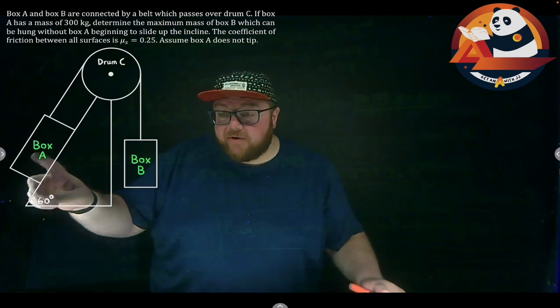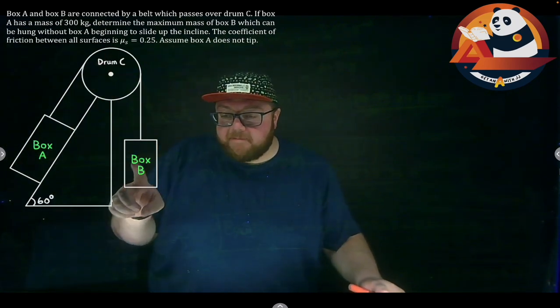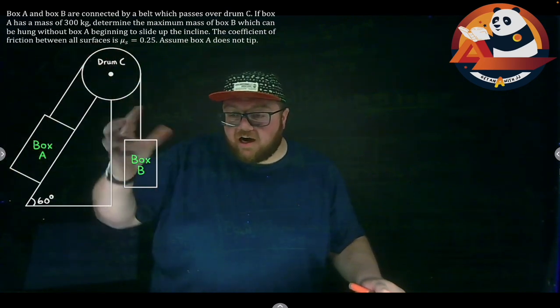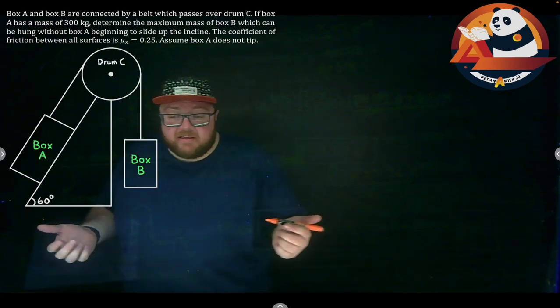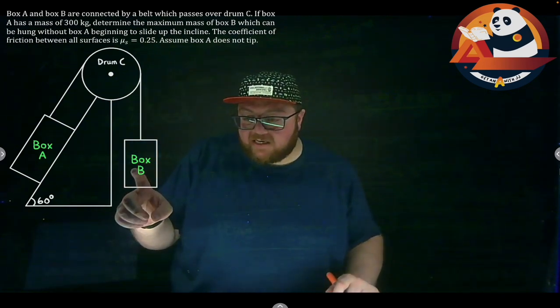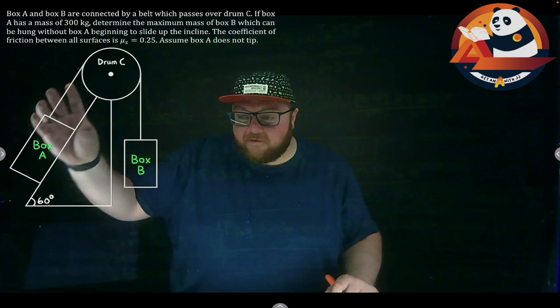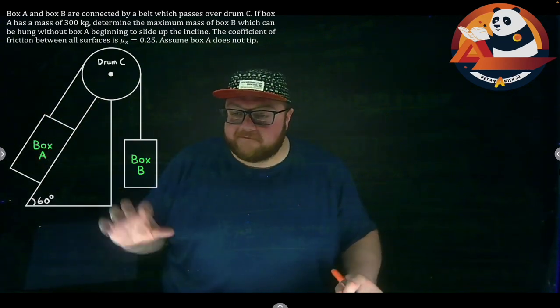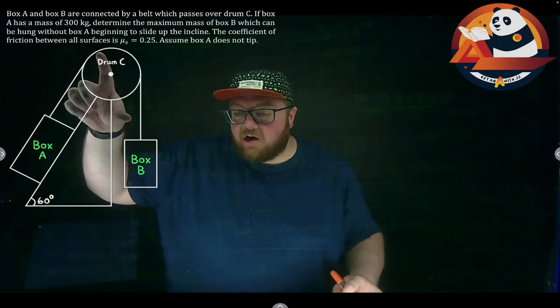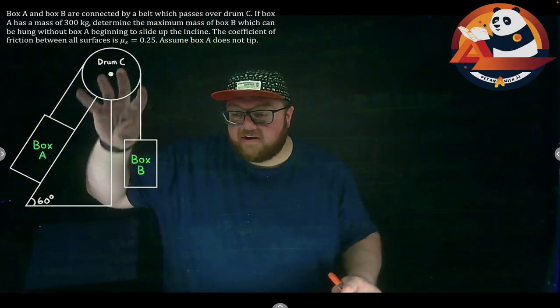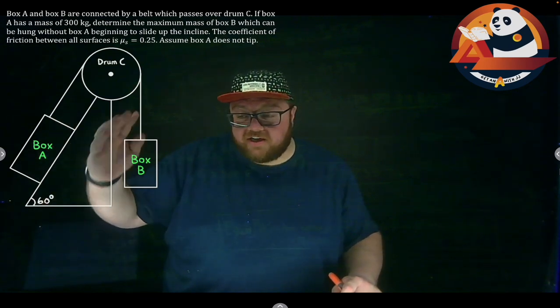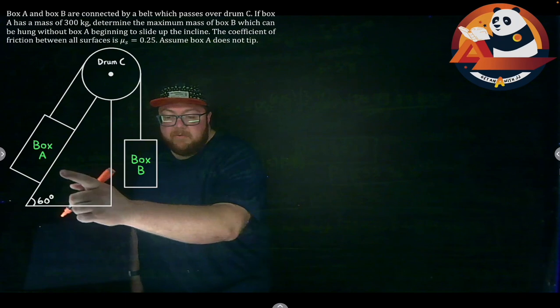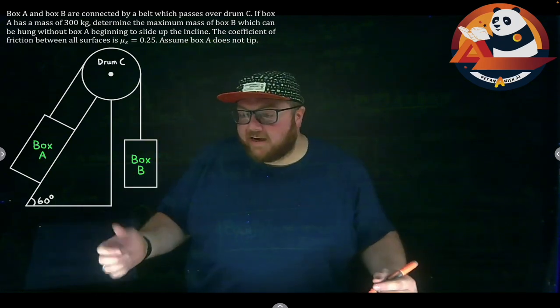If box A has a mass of 300 kilograms, let's determine the maximum mass of box B which can be hung without box A starting to slide up the incline. We could also write this problem and say what's the maximum before A starts to fall down or the minimum before we fall down. We're looking just one way. We'll talk through that second option in a bit. Our coefficient of friction between all surfaces is 0.25. So that'd be at the drum and box A is touching our incline, so we get friction here as well. And we're going to assume that box A doesn't tip over, so we're only dealing with sliding in here.